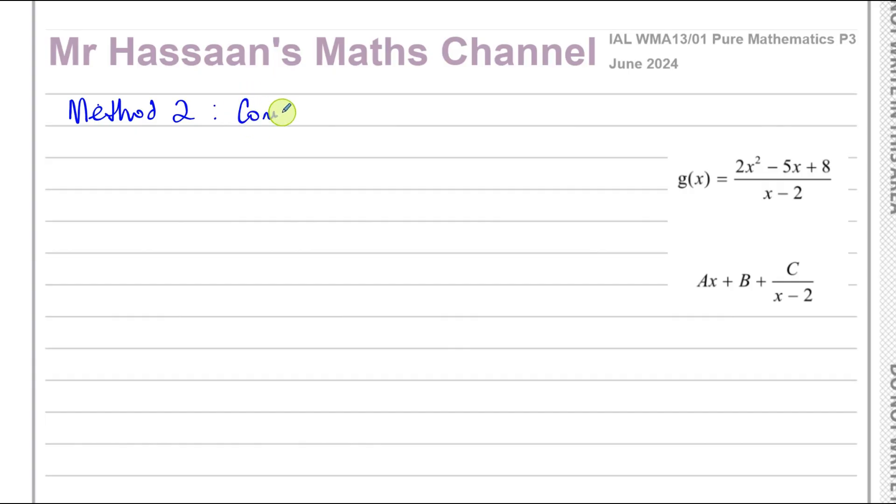This method will be something that we will be forced to use in P4 for certain types of questions. So it's a good idea to have some idea of how it works now. Basically what we know is that this and this are identical. In this case, they've given us the form of what it should look like, which makes it a bit easier for us. If they didn't give us the form, then I would just suggest just go straight for algebraic long division.